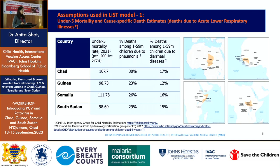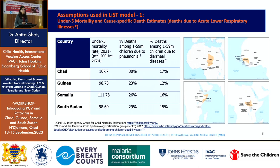Regarding the assumptions going into the model — these slides are available and a brief has been distributed. We're looking at the under-five mortality rate for each of the four countries: Chad, Guinea, Somalia, and South Sudan, as well as deaths attributable to pneumonia and diarrhea specifically. These inputs are taken from the latest estimates from the MCEE — the Maternal and Child Epidemiology Estimation group, also based at Johns Hopkins.